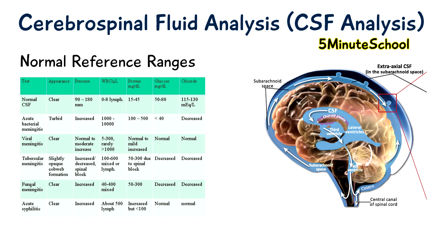A change in the number of blood cells in cerebrospinal fluid is also significant. If there are more white blood cells than the typical values, it may be a sign of some kind of bacterial infection or chronic disease. Red blood cells in the cerebrospinal fluid sample may be a sign of bleeding into the spinal fluid, which could be the result of some trauma.